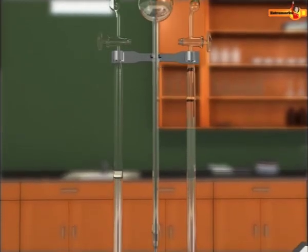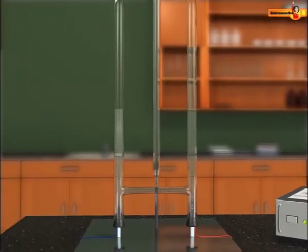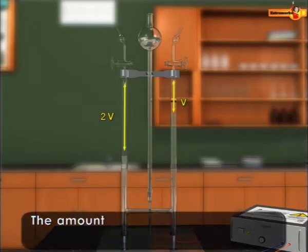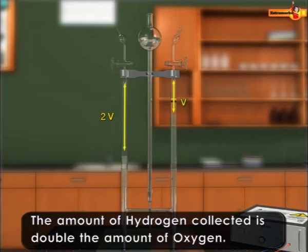Now observe the volume of the gases released at two electrodes. You will notice that the volume of the hydrogen gas released at the cathode is double the volume of the oxygen gas formed at the anode.